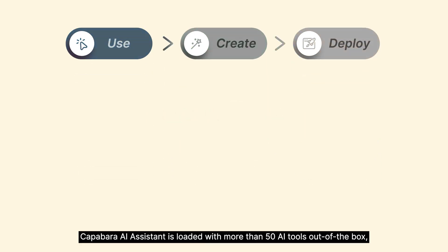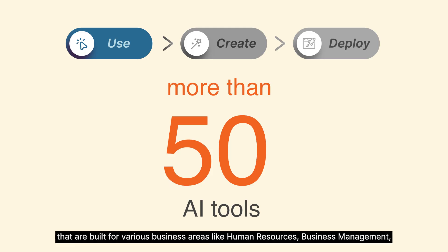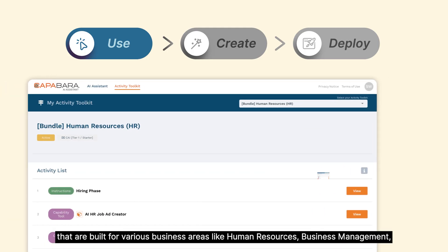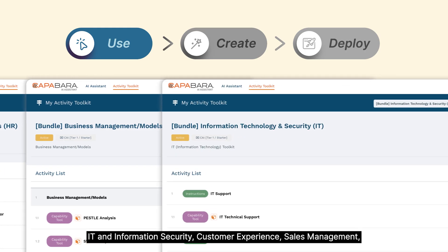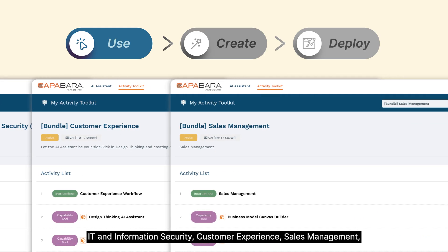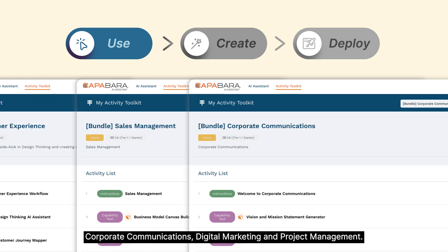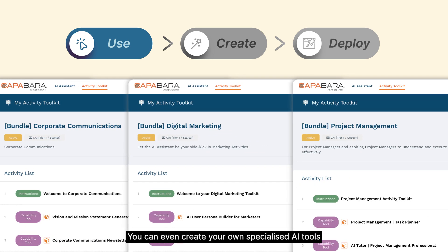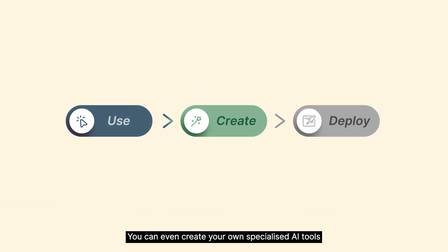Capybara AI Assistant is loaded with more than 50 AI tools out of the box that are built for various business areas like human resources, business management, iKey and information security, customer experience, sales management, corporate communications, digital marketing, and project management. You can even create your own specialized AI tools to enhance productivity and learning.